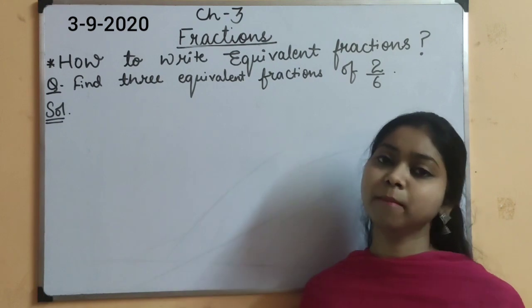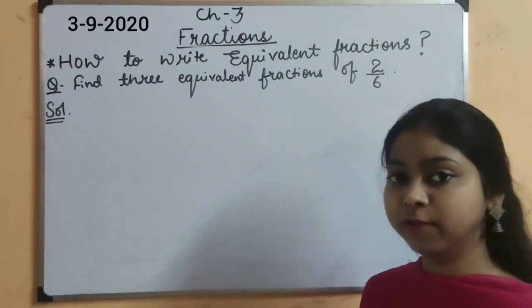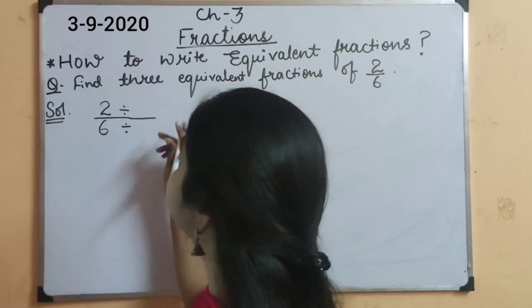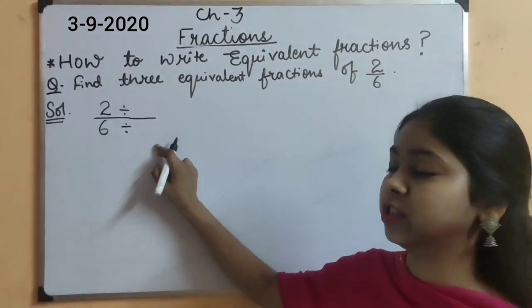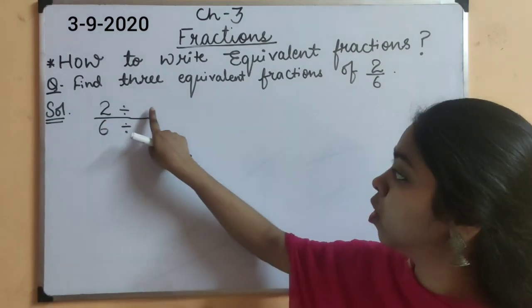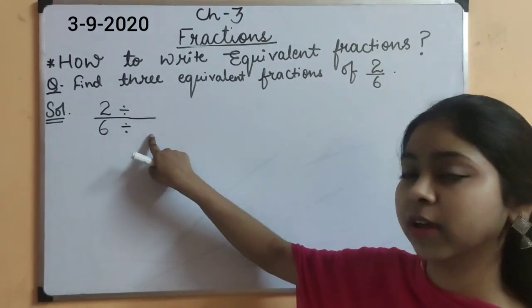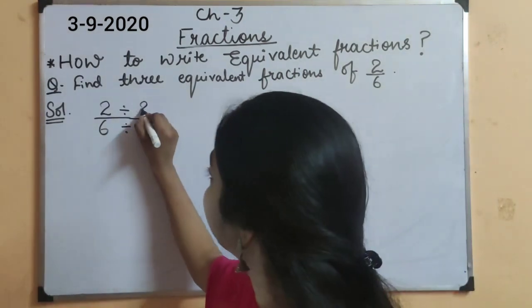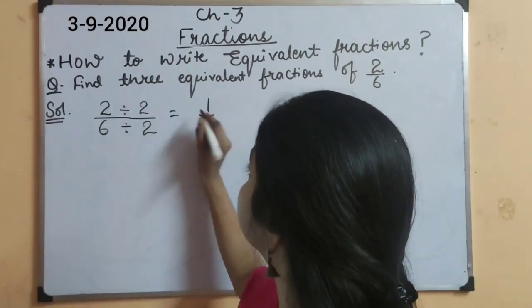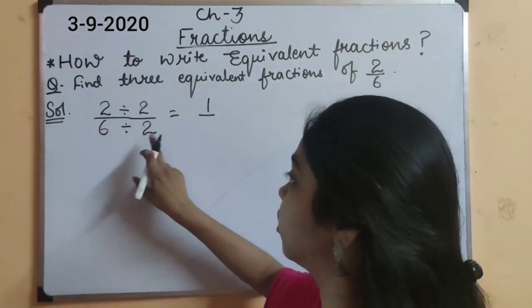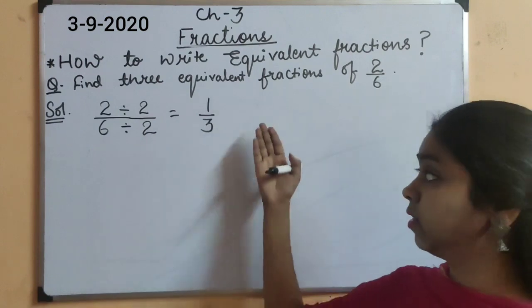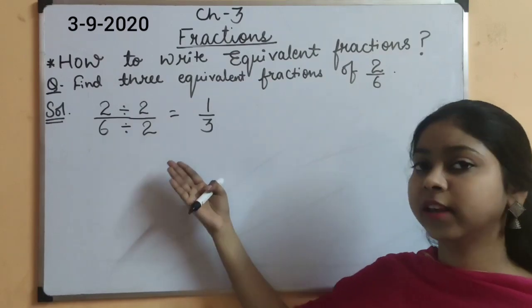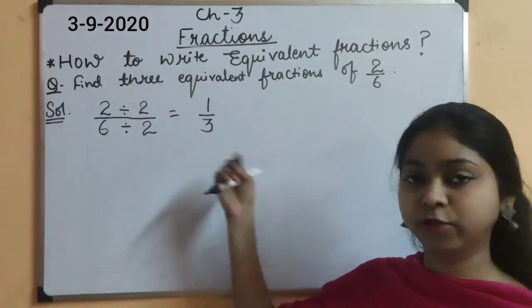To write equivalent fractions, we need to use our 2 ways. Like, our division method or multiplication method. In the way of division method, we need to divide the numerator and denominator from any of their common factor. Like, the 2 number can be divided from number 2 and this 6 can also be divided from the number 2. So, we need to divide these fractions from the same number. If I divide it from 2, so its fraction is 1. 2 divided by 2 is 1, 6 divided by 2 is 3.